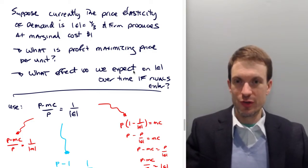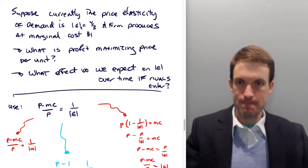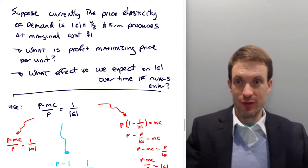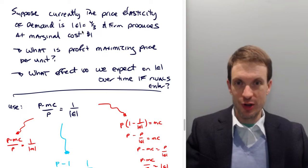Hello and welcome everyone. This is an interesting video where we're going to assume we have a firm facing some particular demand curve, some firm with market power. We're given the price elasticity of demand, we're given a marginal cost, and we want to find the profit maximizing price per unit.